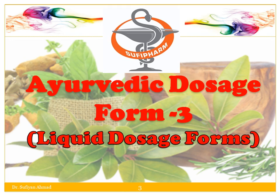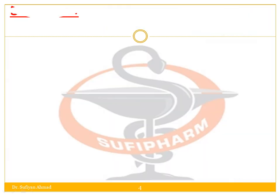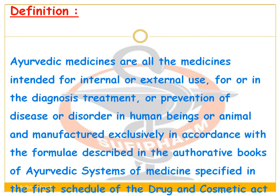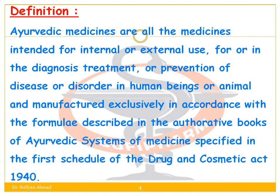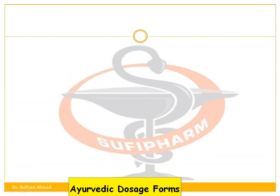First of all we'll see what is the Ayurvedic dosage form. It can be defined as: Ayurvedic medicines are all medicines intended for internal or external use for the diagnosis, treatment, or prevention of disease or disorder in human beings or animals, and manufactured exclusively in accordance with the formula described in the authoritative books of the Ayurvedic system of medicine as specified in the First Schedule of the Drugs and Cosmetics Act, 1940.